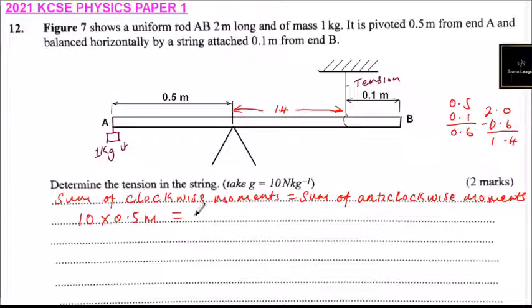So this is equal to tension multiplied by 1.4. So this means that T equals 10 multiplied by 0.5 and you divide by 1.4, which when you use your calculator, you should be able to get 3.57 N.